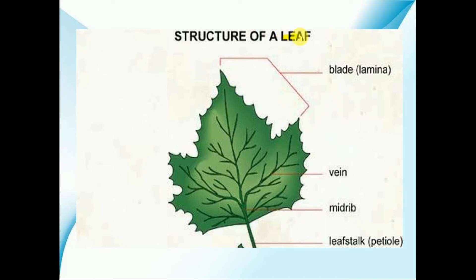First of all, we will understand what is the definition of the leaf, or how you can define the leaf. A leaf is the green colored flattened structure which is present on the plant.